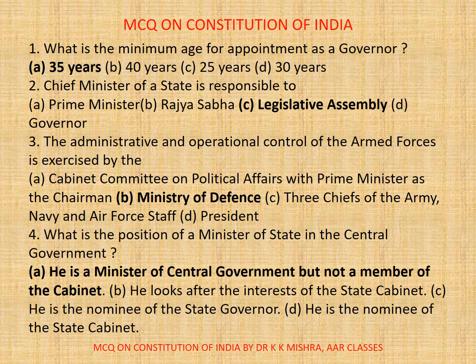Question number 1. What is the minimum age for appointment as a Governor? Options are: a) 35 years, b) 40 years, c) 25 years, d) 30 years. Correct option is a) 35 years.